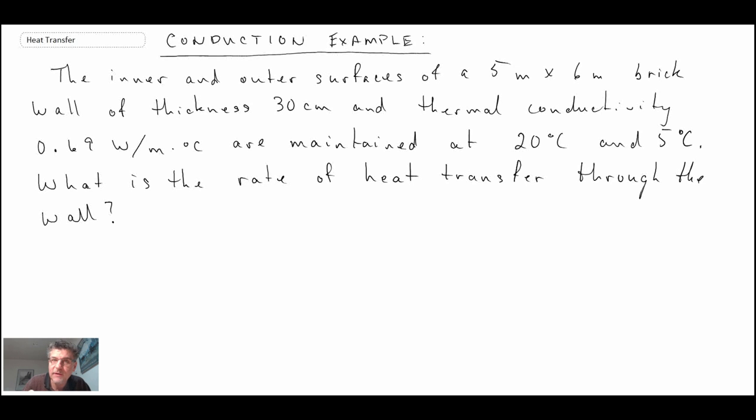So let's write out what we know, and we should do this whenever we're solving problems. Begin by writing out what we know. So our knowns: we were given the dimensions of the wall and consequently we can determine the area, the thickness of the wall. We were told the thermal conductivity, remember from Fourier's law, K was the thermal conductivity so we use K, middle K for that.